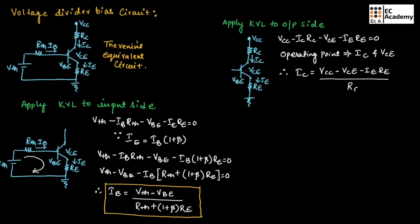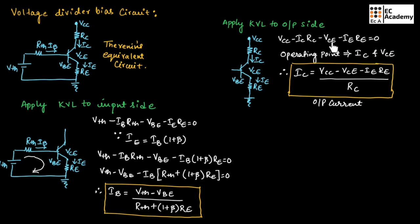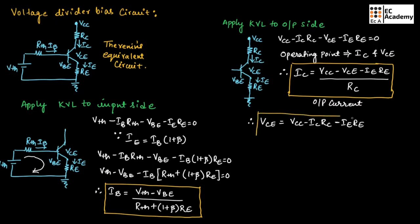This is the expression for output current Ic. From the same equation, we can find the expression for Vce: Vce = Vcc − Ic·Rc − Ie·Re. This is the expression for output voltage Vce. By finding the values of Ic and Vce, we can determine the operating point.